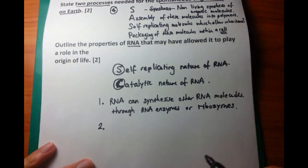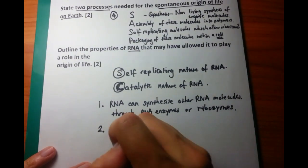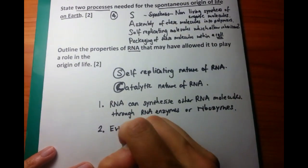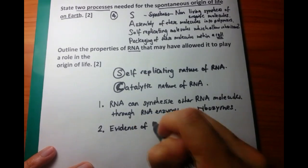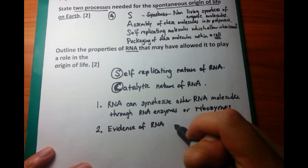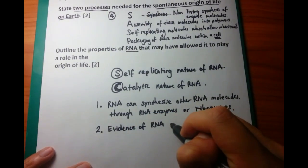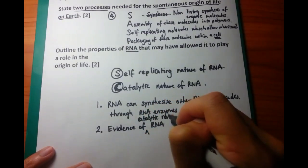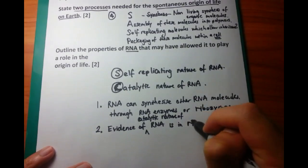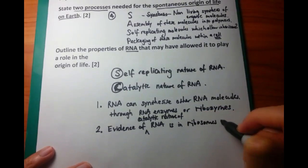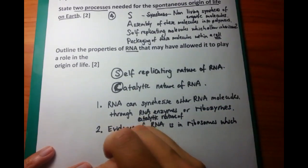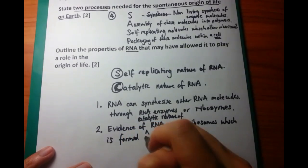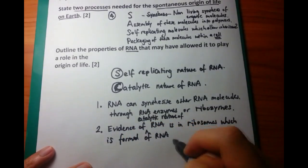Now the second point is that there is evidence of the catalytic nature of RNA. And this is because ribosomes, which are currently used to make proteins, are made of RNA within itself. So that means that RNA is used currently to make up a particular organelle. And this can be used to form more RNA, or more proteins currently.